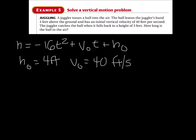The last part says the juggler catches the ball when it falls back to a height of 3 feet. The key words 'catches' and 'falls back' imply we're at the final height, so h equals 3 feet. Now we have all our values and need to solve for time — the question is asking how long the ball is in the air, so we need to find t. Let's plug all the numbers in and get a quadratic to work with.